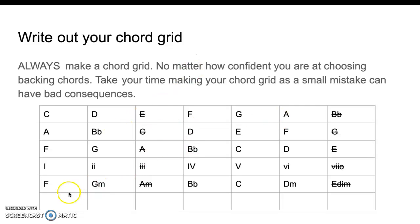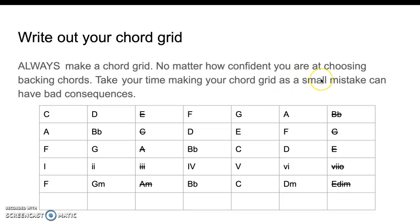I'm going to use the names of the chords rather than chord numbers when picking chords in the exercise itself. Normally you're given the choice of using either Roman numerals or chord names, but don't mix them. For example, don't write 'V' for the second-to-last chord and then 'F' as the last chord — stick to one method.